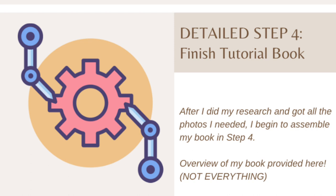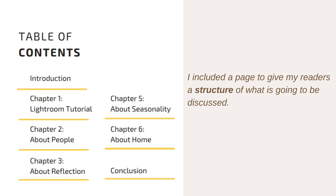Moving on to step four. After doing my research and getting all the photo materials I needed, I began to assemble and finish my tutorial book. An overview of my book will be provided here. It is important to note that I won't cover everything because I have around 90 pages in total, so I will try to get through the structure and the key parts. Here is a table of contents. I included an introduction, a Lightroom tutorial, a section on people, a section on reflection photography, a section on seasonal photography, a section on home photography, and lastly, a conclusion.